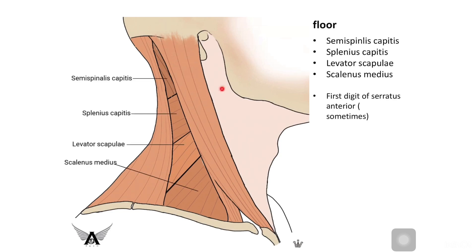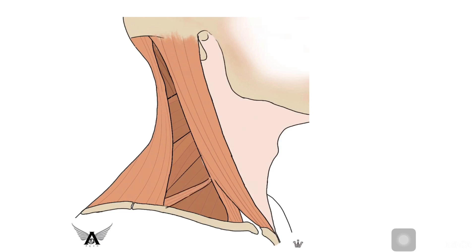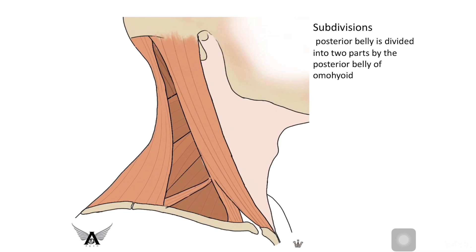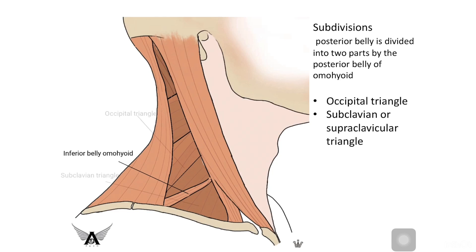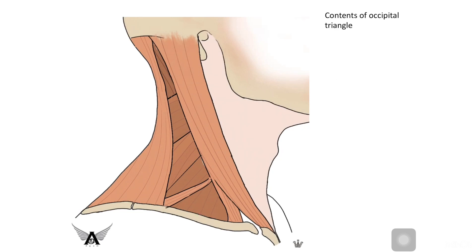The floor is formed by four muscles: semispinalis capitis, splenius capitis, levator scapulae, and scalenius medius. The subdivisions of the posterior triangle are formed by the inferior belly of the omohyoid, dividing it into the occipital triangle and the subclavian triangle.